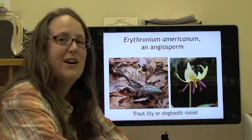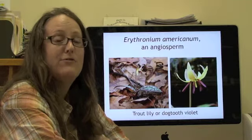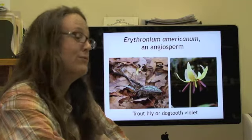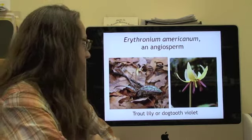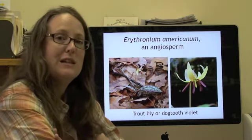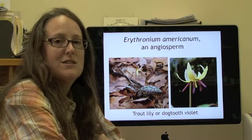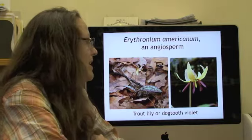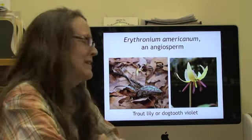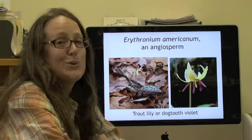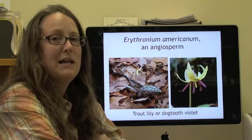Angiosperms are defined by their ability to make flowers and fruits. Here's an example: this is a trap lily or dog tooth lily. I often teach this class in the spring, and so I like to give a spring flower as an example. Maybe you saw some of these in spring if you go hiking.